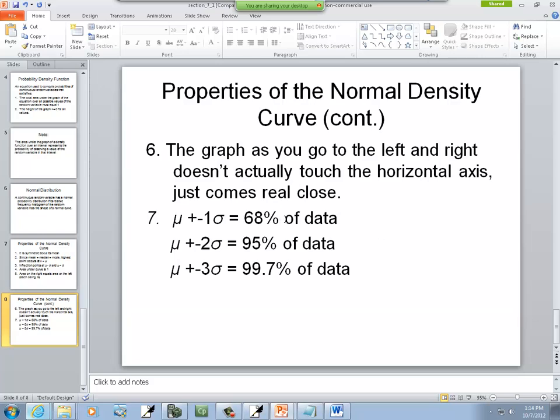And then our mu plus or minus one standard deviation is 68% of the data. Mu plus or minus two standard deviation is 95% of the data. And mu plus or minus three standard deviation is 99.7% of the data. That's our empirical rule that we talked about before.